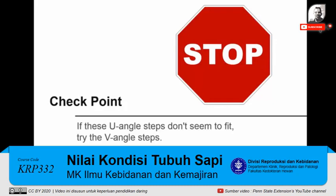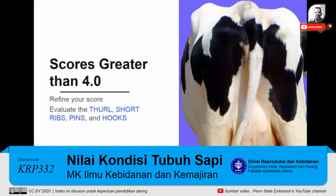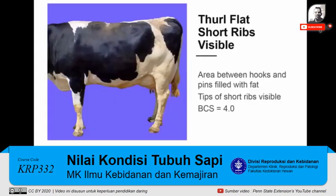If you can clearly see the ligaments described here, you may have assigned the cow to the wrong group at step one — try going through the steps for cows with a V angle instead. For cows scoring over 4, we refine the score by evaluating the thurl, short ribs, pins, and hooks — the score increases as more of these parts are covered with fat. The area between the hooks and pins fills in first, so in all cows with a score over 4, the thurl area appears flat. The short ribs get covered next: if you can see the tips of individual bones in the short ribs, the cow scores 4.0.